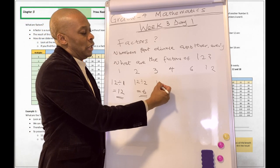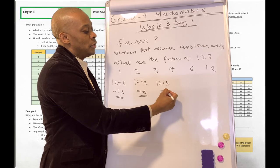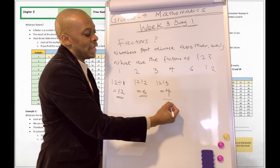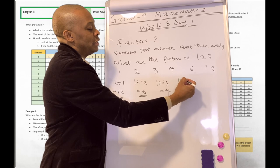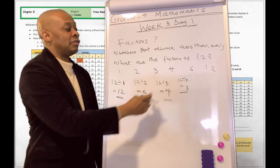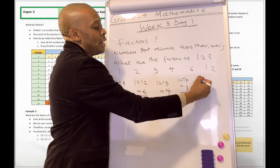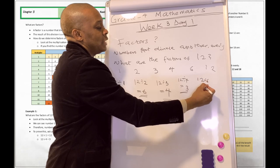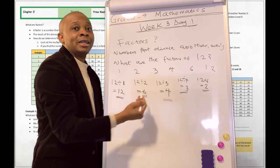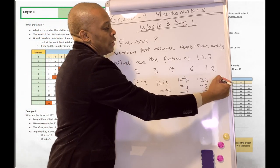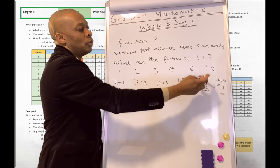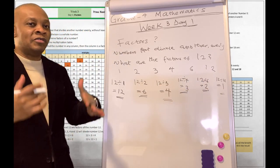12 divided by three equals four — that's a whole number, so three is a factor of 12. 12 divided by four equals three — another whole number, so four is a factor of 12. 12 divided by six equals two — the answer is a whole number, so six is a factor of 12. 12 divided by 12 equals one — and that answer is a whole number, so 12 is a factor of 12.